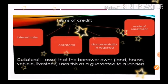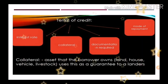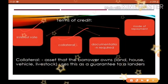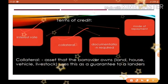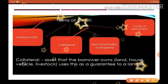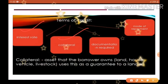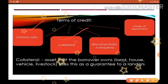Informal और formal तो clear हो गया, लेकिन लोग फिर भी informal sector को prefer करते हैं। क्योंकि formal sources में कुछ terms होती हैं — पहली है interest rate, दूसरी है collateral। Collateral वो asset होती है जो borrower, guarantee के तौर पर lender के पास रखता है। यदि borrower loan repay करने में fail हो जाए, तो lender उसकी asset बेचकर अपना loan पूरा कर सकता है।